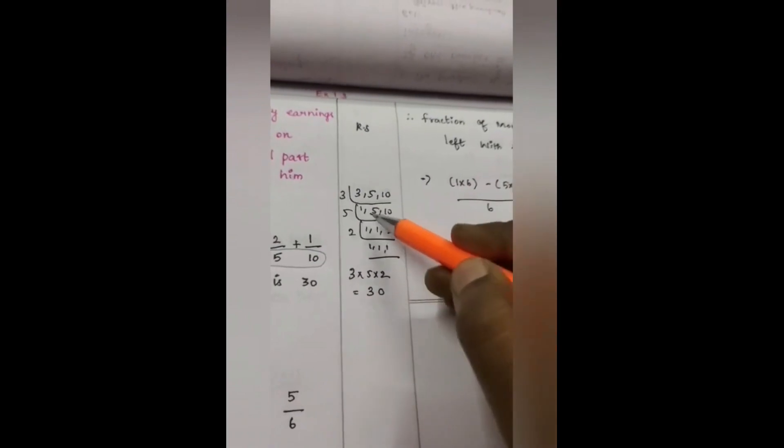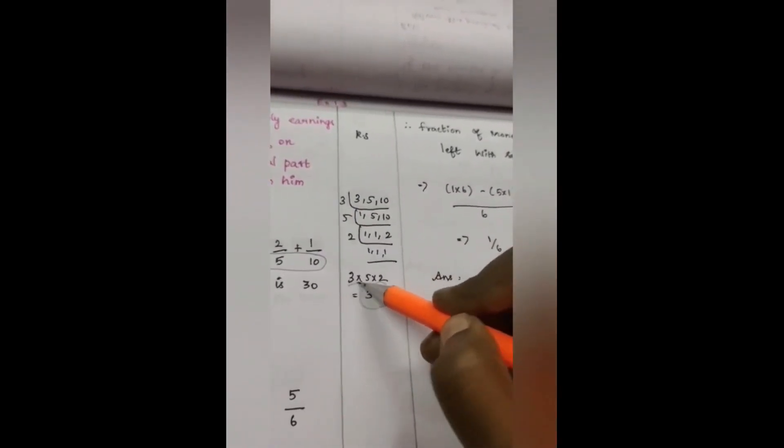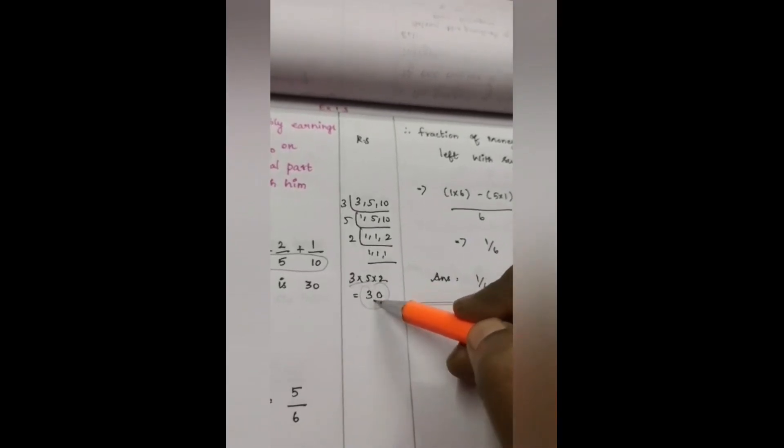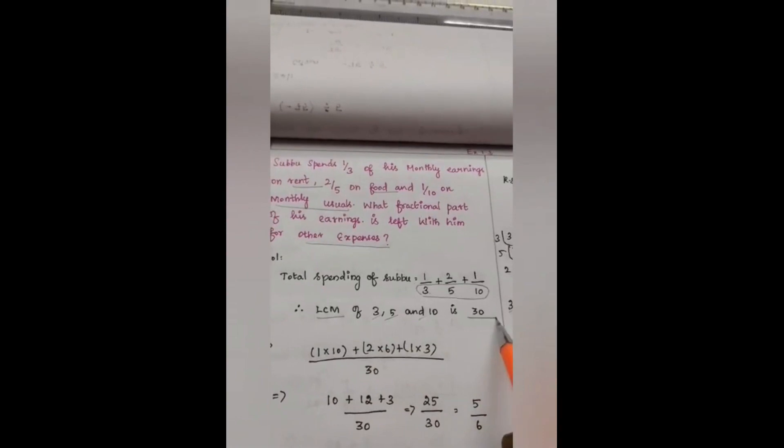3 tables, 5 tables, 2 tables. After taking LCM, 3 fives are 15, 15 into 2 is 30. Therefore, LCM of 3, 5 and 10 is 30.